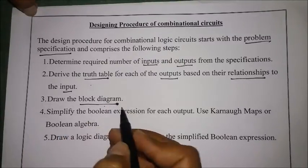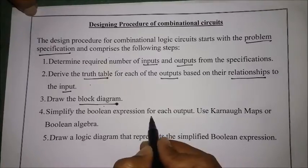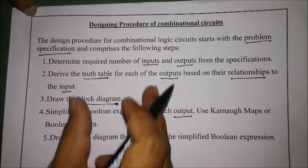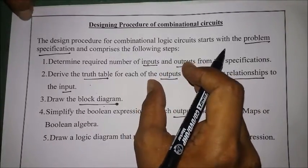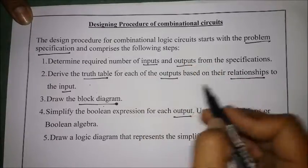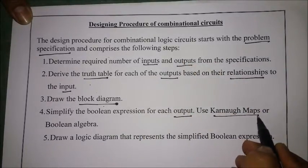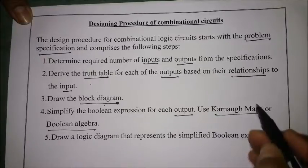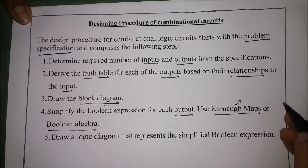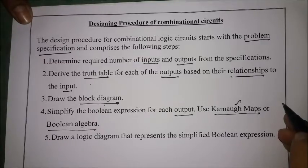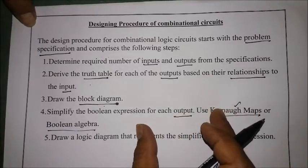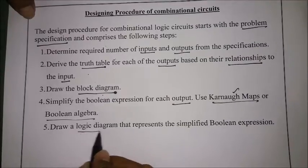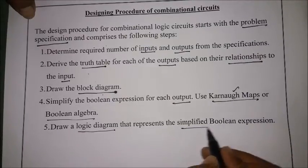Once the block diagram is done, we simplify the boolean expression for each output. From the output column of the truth table, we can get a boolean function, which can be simplified using K-maps or boolean algebra. K-maps are the easiest method for simplification. After simplification, we draw the logic diagram that represents the simplified boolean expression.